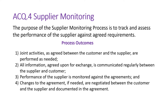The purpose of the supplier monitoring process is to track and assess the performance of the supplier against agreed requirements. We have a set of requirements defined in the beginning for a supplier by your quality management system, and there is a set of performance activities — the minimum criteria set by the customer for the supplier. The supplier needs to fulfill all the performance activities defined as part of your QMS, and we need to track and assess the performance of the supplier.